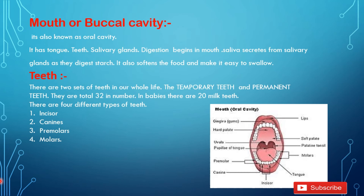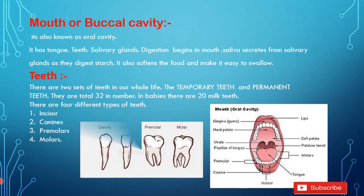The next topic is teeth. There are two sets of teeth in our whole life: the temporary teeth and the permanent teeth. The temporary teeth are the milk teeth, present from early age up to 7 to 8 years. Then, gradually, new permanent teeth grow. There are 32 permanent teeth. There are different types of teeth in our mouth: incisors, canines, premolars, and molars.